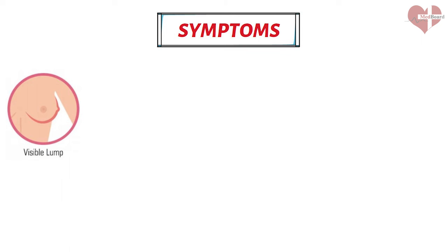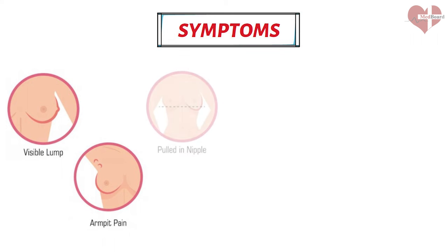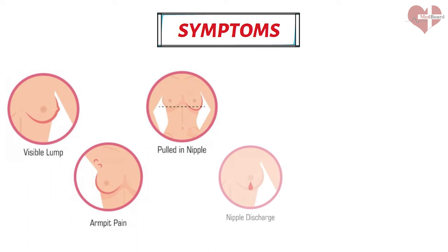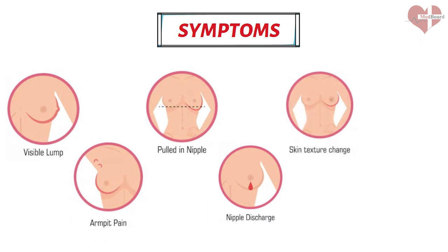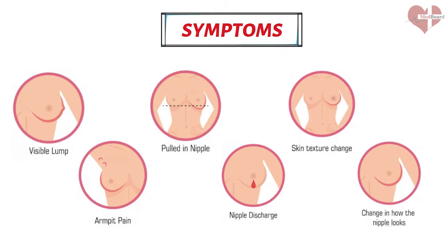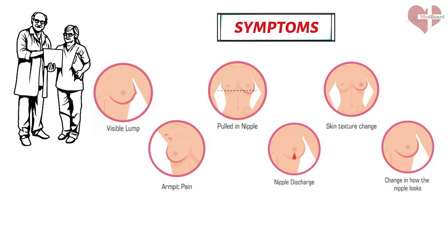These lumps can often feel hard and immovable and may be painless. Breast cancer can also cause pain or tenderness in the breast tissue, although this is not always present. Breast cancer can cause the breast tissue to become asymmetrical or to change in shape or size. A discharge from the nipple, particularly if it is bloody, may be a sign of breast cancer. Changes in the skin of the breast, such as redness, dimpling, or puckering, can also occur. It is important to note that these symptoms may also be caused by conditions other than breast cancer, so it is important to see a healthcare provider if any of these symptoms are present.